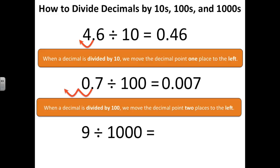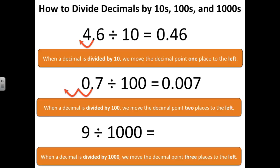9 divided by 1 thousand. We also learned that when a decimal is divided by 1 thousand, we move the decimal point three places to the left. So we'll move the decimal point over three places to the left, and our answer is 9 thousandths.